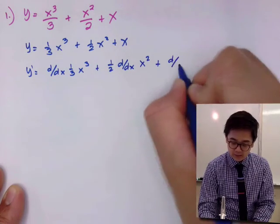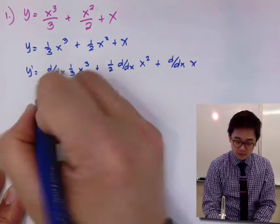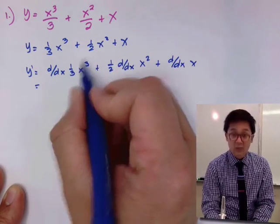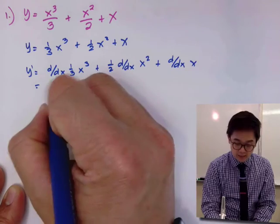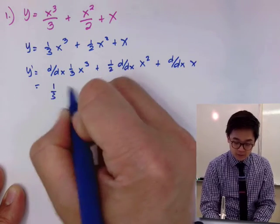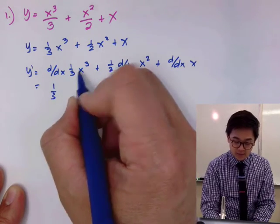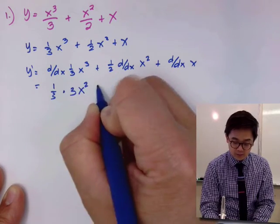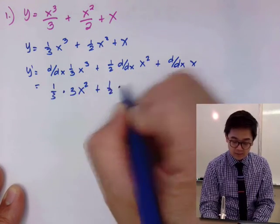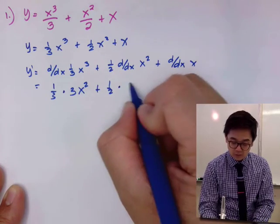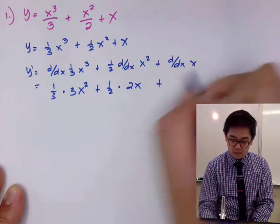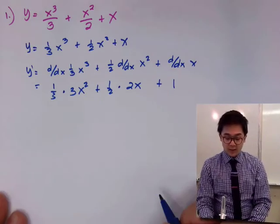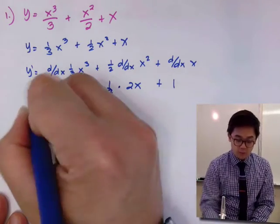Plus d/dx of x. We know that for every constant we can just ignore it and take the derivative of the variable. So we'll have 1 third times 3x squared, plus 1 half times 2x, plus the derivative of x which is simply 1.